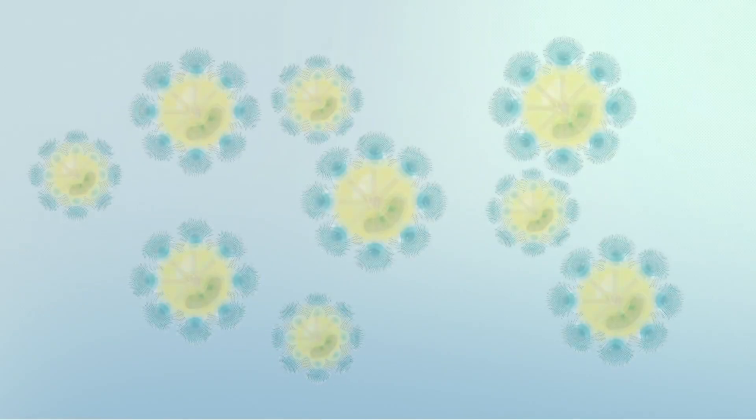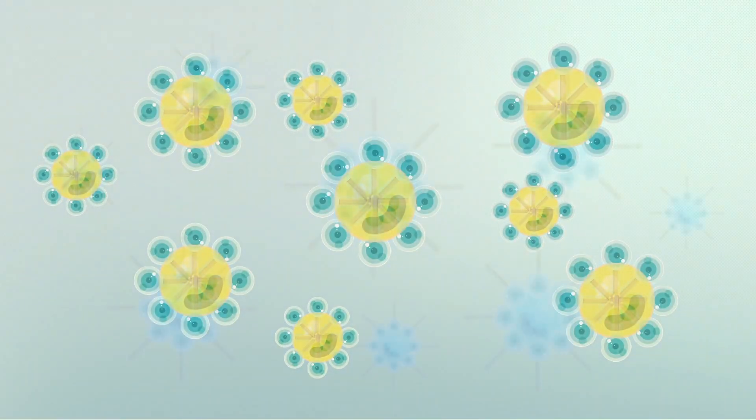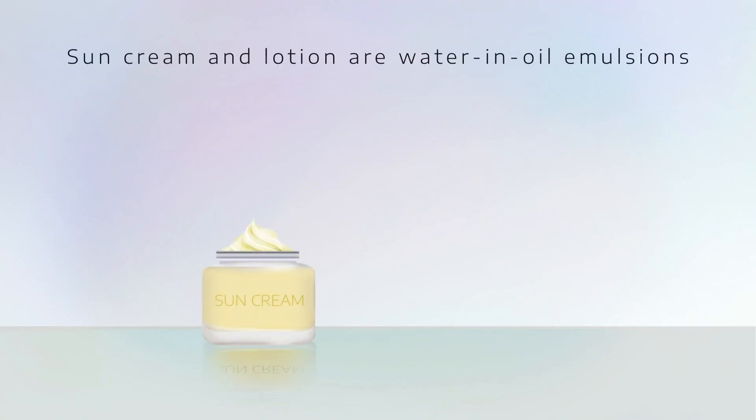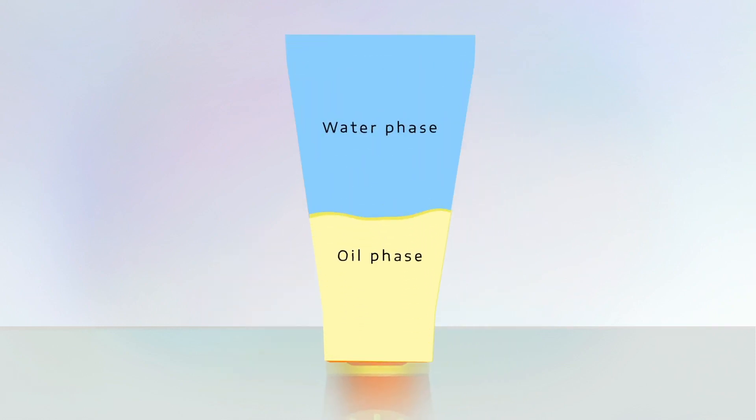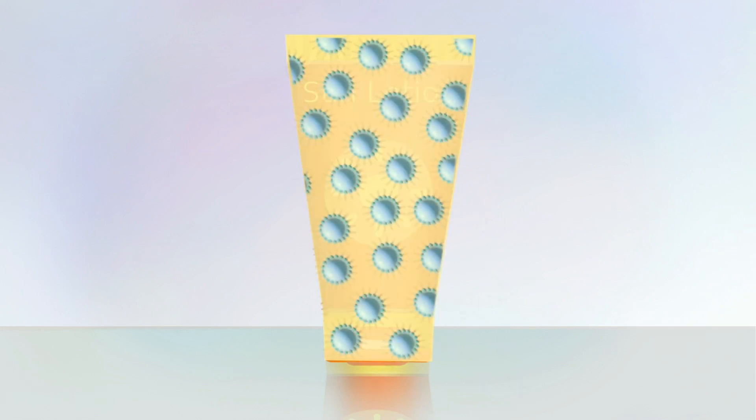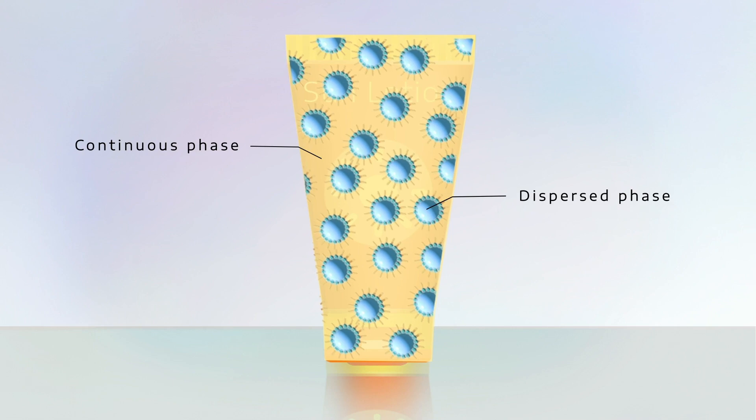Simple emulsions are either oil dispersed in an aqueous phase or water dispersed in oil. For example, many sun creams and lotions are water in oil emulsions containing an aqueous dispersion of sunscreen ingredients finely dispersed in oils and waxes. In this case, we call the oil the continuous phase and the water is the dispersed phase.